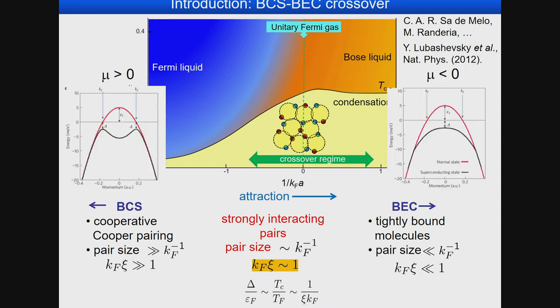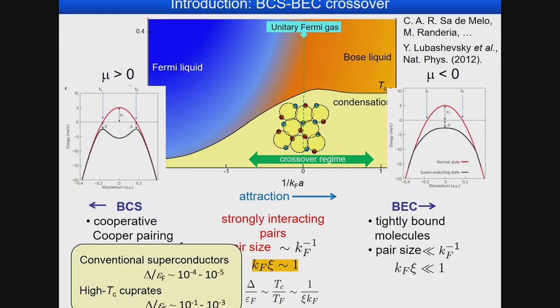Consider a single band given by the red curve in the normal state. In the BCS limit, you have a gap opening at the Fermi wave vector K_F, giving a minimum gap at K_F — visible in ARPES measurements. In the BEC limit, the chemical potential becomes negative and the gap opening occurs at K=0, not at K_F, so you have a minimum gap at the gamma point. In conventional superconductors, the ratio Δ/E_F is very small — like 10⁻⁴ or 10⁻⁵ — so they are firmly in the BCS limit.